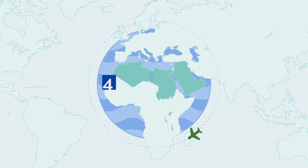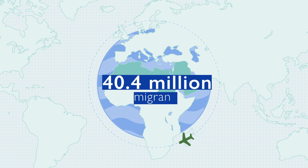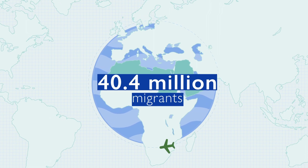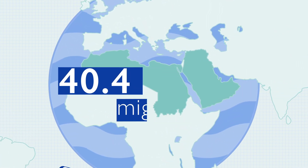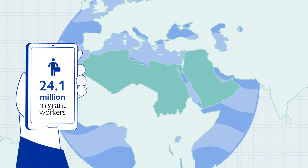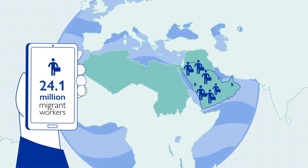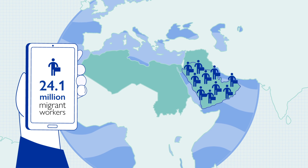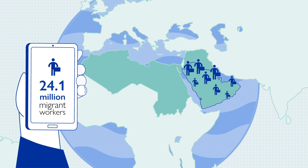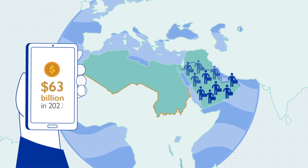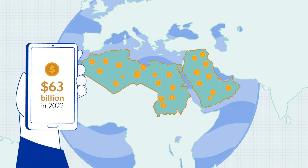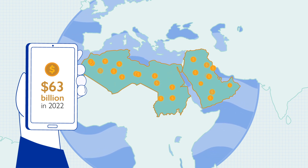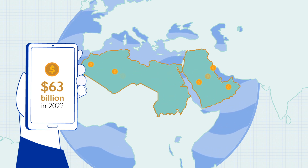With the region hosting 40.4 million migrants, growing twice as fast as the global average, with an estimated 24.1 million migrant workers, the GCC countries play a pivotal role, hosting a substantial part of this workforce. The remittance inflow to the MENA region reached USD 63 billion in 2022.